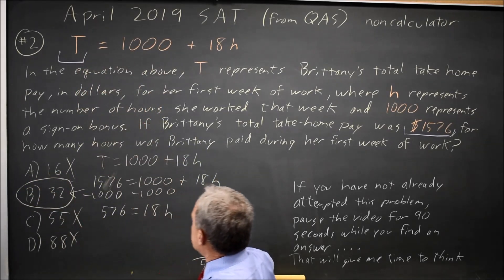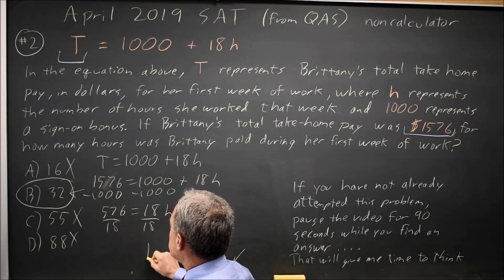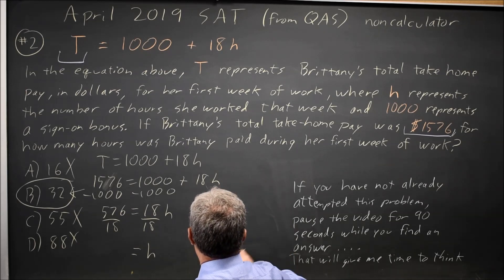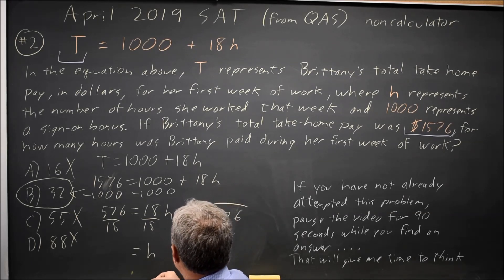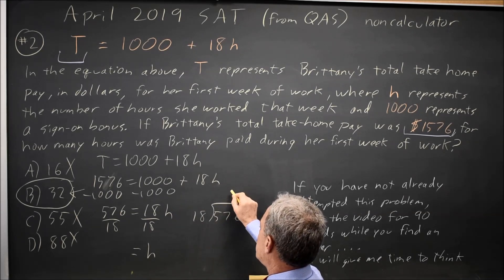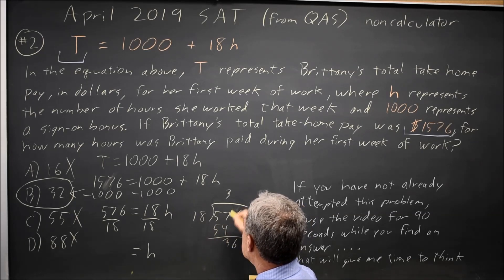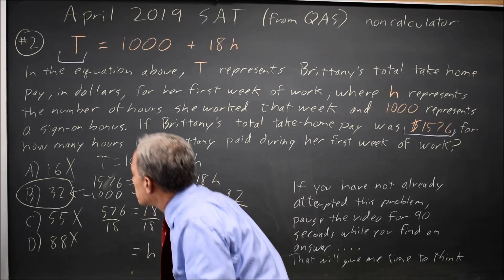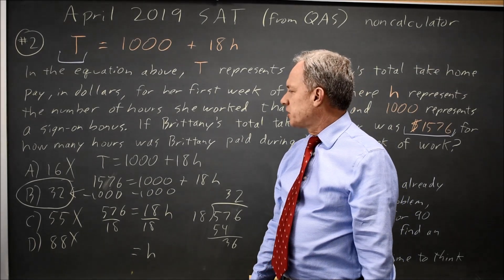I think estimation is a little easier than dividing both sides by 18. If you do it that way, h equals 576 over 18. 18 goes into 57 three times, that's 54. 18 goes into 36 twice. That's not terrible, but if the arithmetic is hard, it's much better to use estimation — that's what estimation is for.